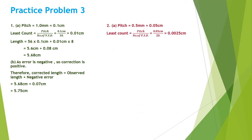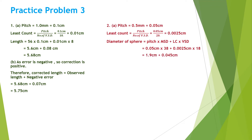Practice problem three, second part: pitch is 0.5 mm, which equals 0.05 centimeter. Least count is pitch over number of vernier scale divisions: 0.05 over 20 equals 0.0025 centimeter. The diameter of the sphere is pitch times main scale division plus least count times vernier scale division. Pitch is 0.05 centimeter times the 38th division, plus 0.0025 centimeter times 18. That gives 1.9 centimeter plus 0.045 centimeter.